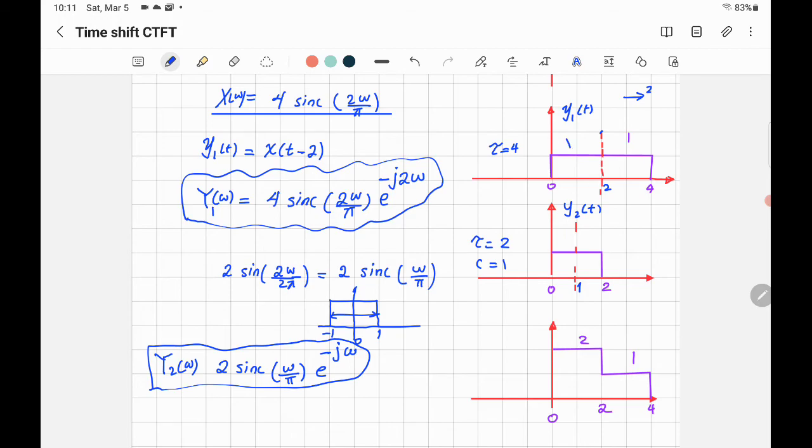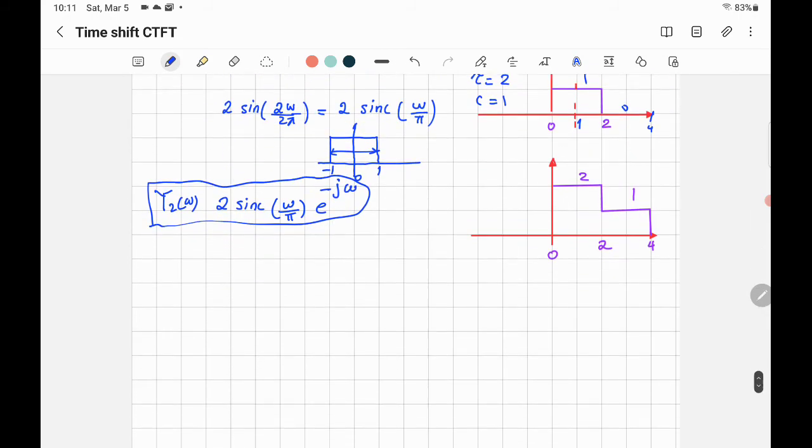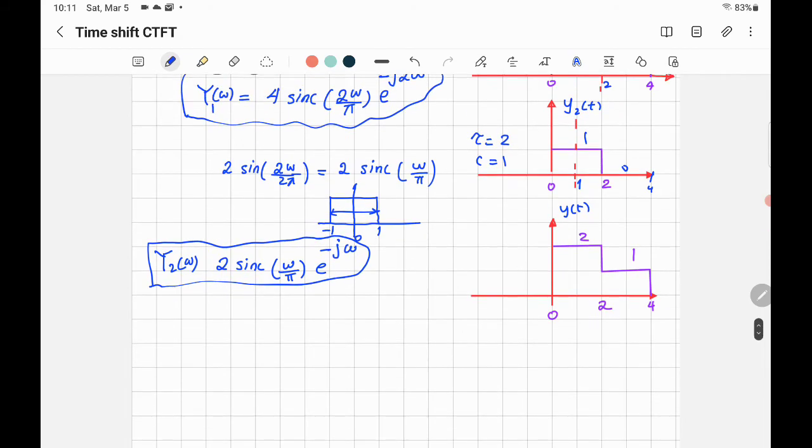If you add both signals, so you have from 0 to 2, from 0 to 2 you have 1 and 1, you get 2. And then from 2 to 4 you have 1 in Y₁ and 0 in Y₂, and you add, you get 1. So you get a signal like that. So if the question started like that, Y(t), you divide it into two signals like what we did.